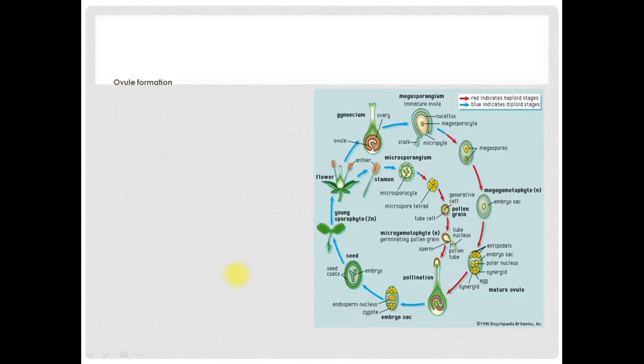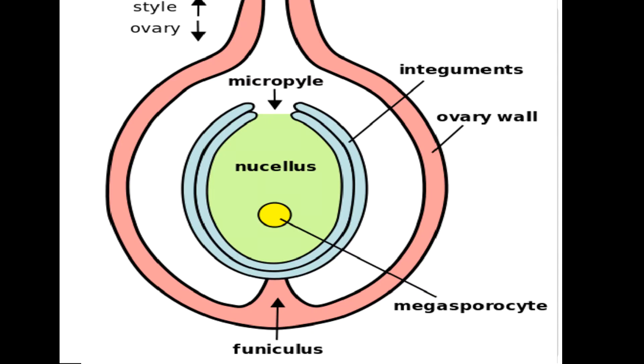Now let's take a look at ovule formation. An immature ovule consists of cells known as nucellus and is enclosed and protected by two integuments except for a narrow channel at the tip, the micropyle.